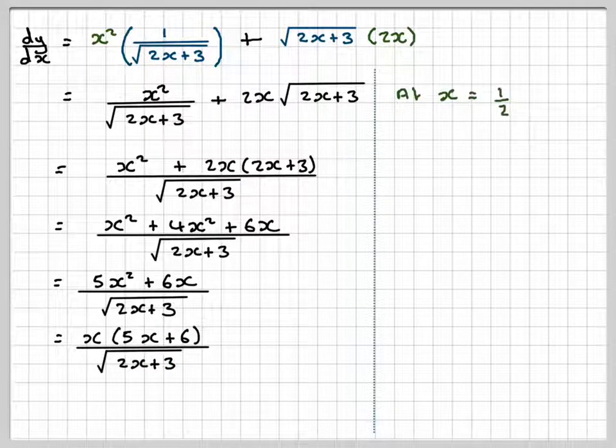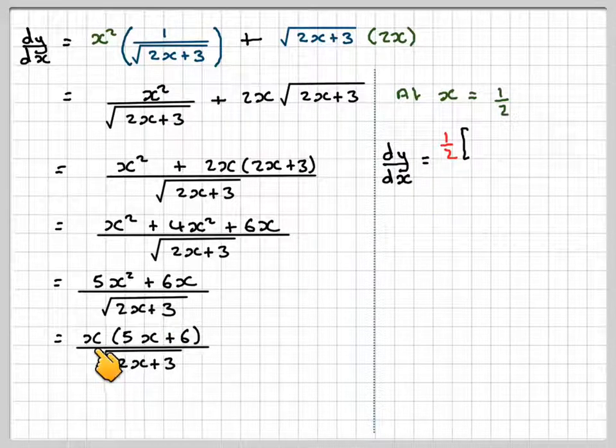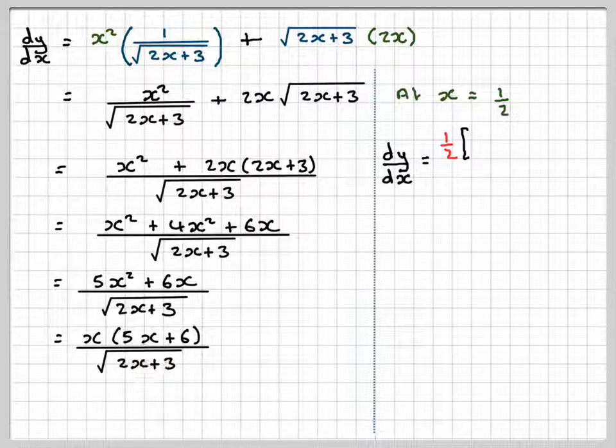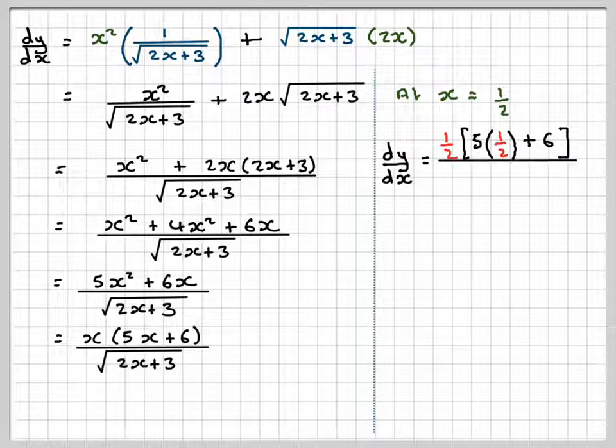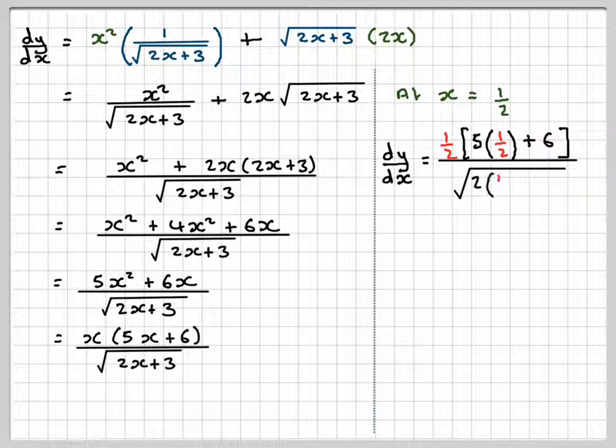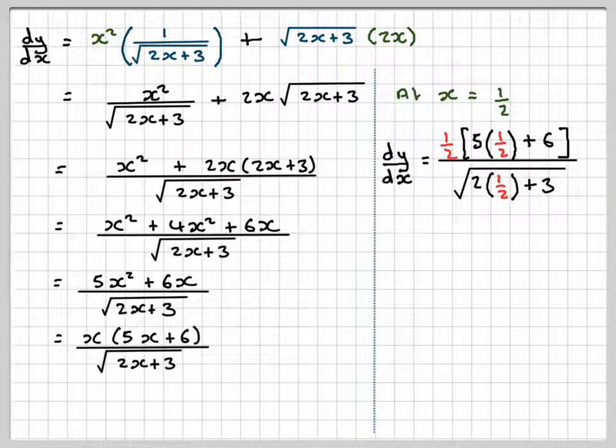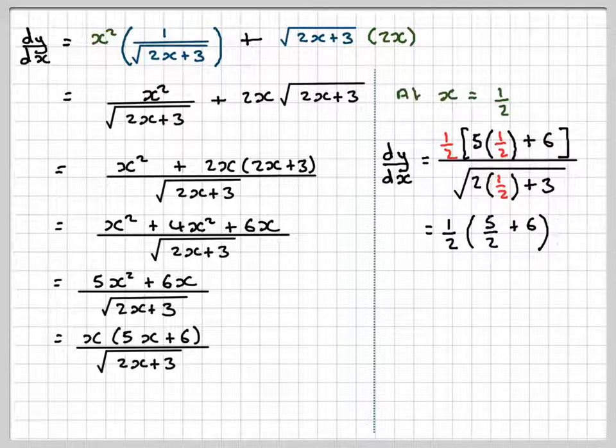So at x equals a half, we put a half in here. We're going to get dy by dx is a half times 5 times a half plus 6 over the square root of 2 times a half plus 3. So that's going to be a half times 5 over 2 plus 6.